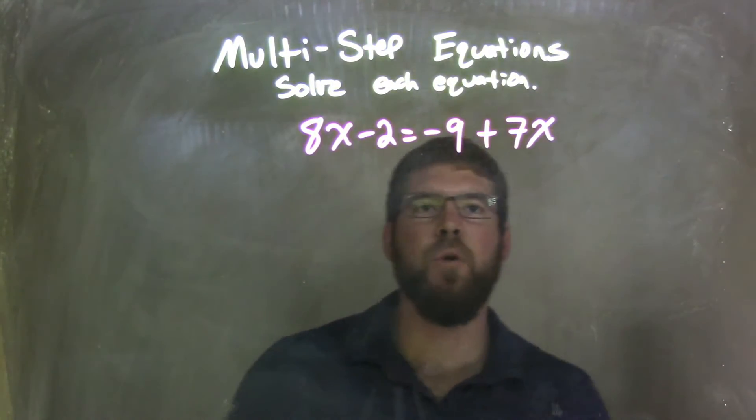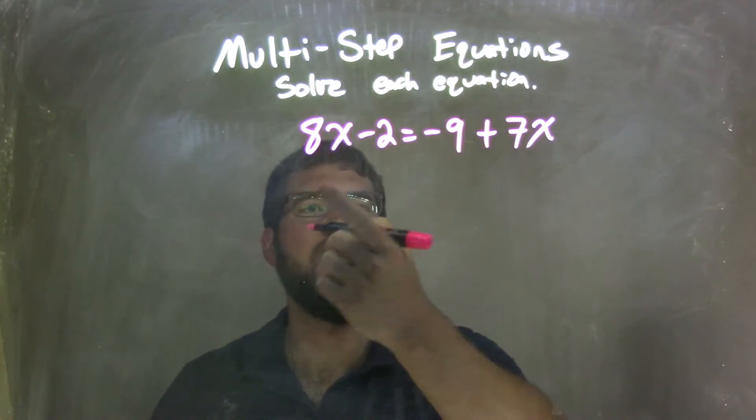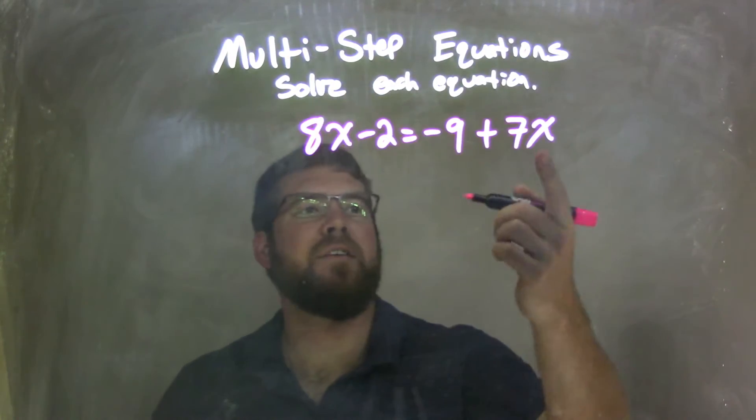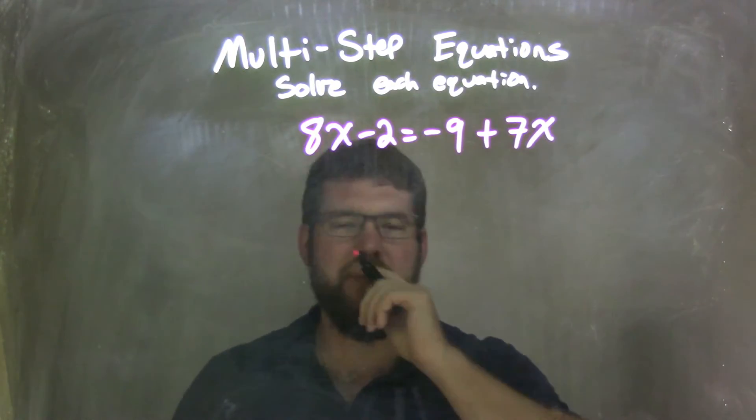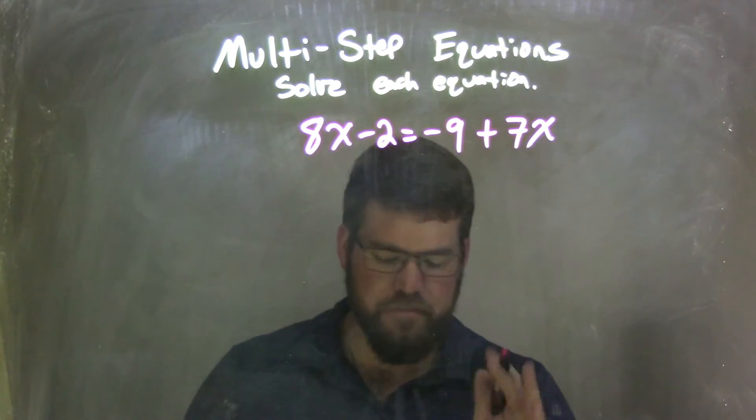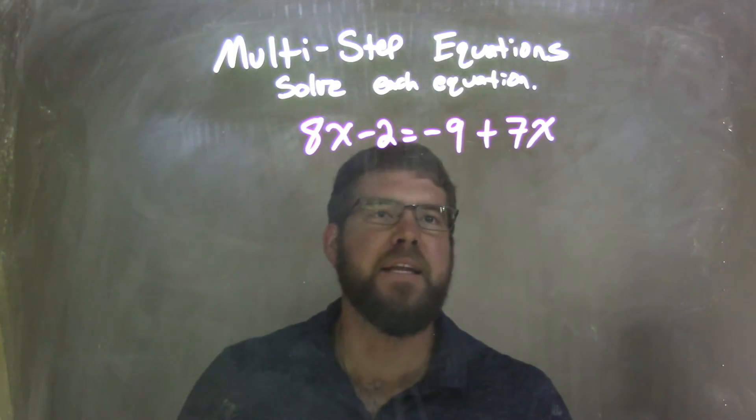I'm going to combine my like terms. What I'm going to do is bring my x's to the left and my numbers to the right. The reason why I'm doing it that way is I know if I subtract 7x, I still keep x positive, and I try to keep my x as positive as possible. It's not a cold, hard set thing, but I find it easier.